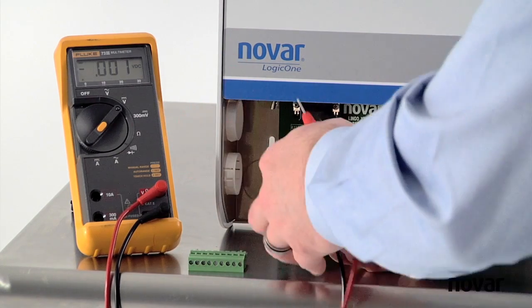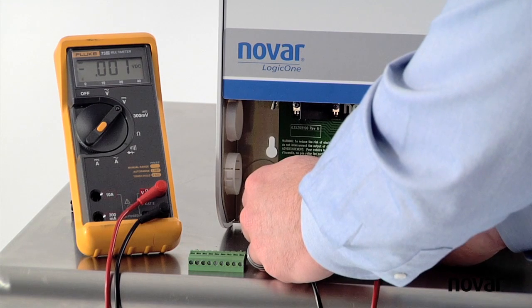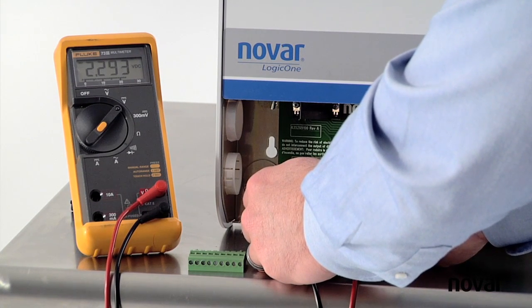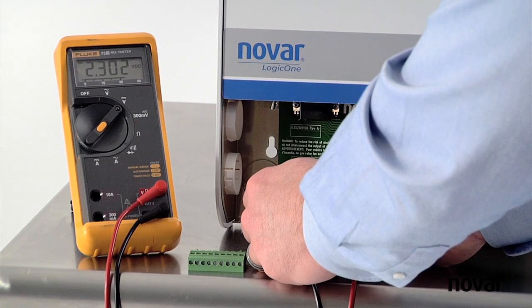And then I'll move my red lead to the negative, keeping my black lead on the shield. And I'll see this one produces 2.3 volts DC from the negative to shield.